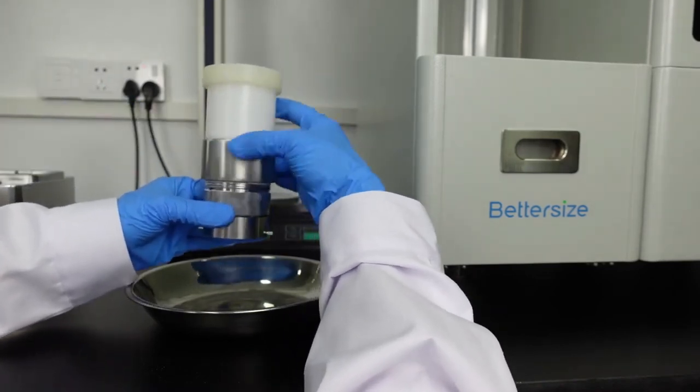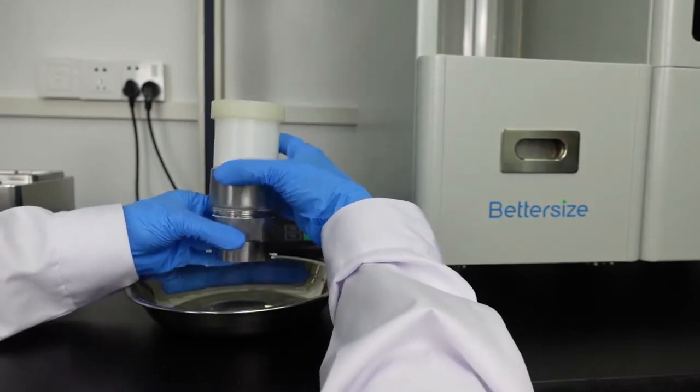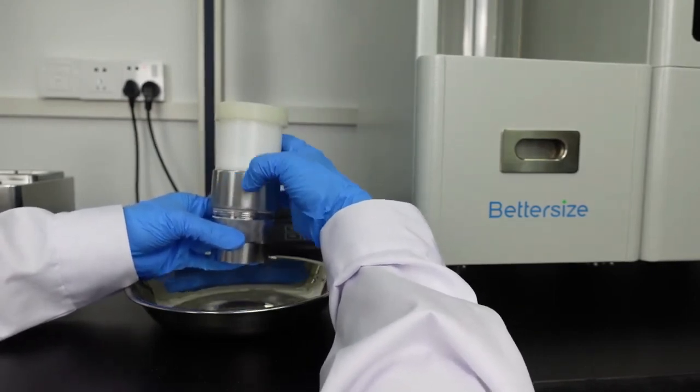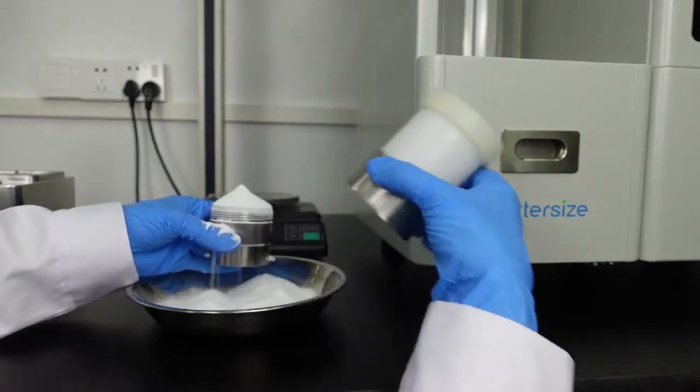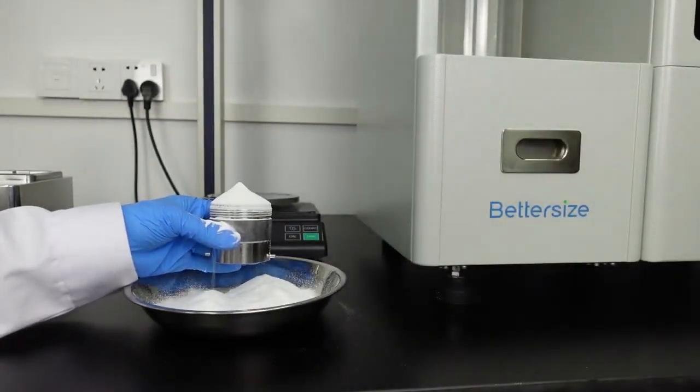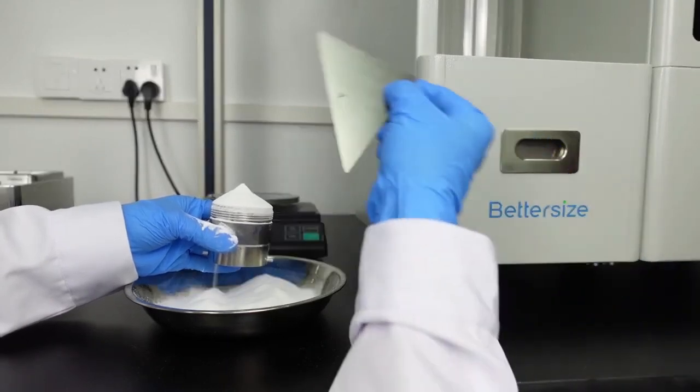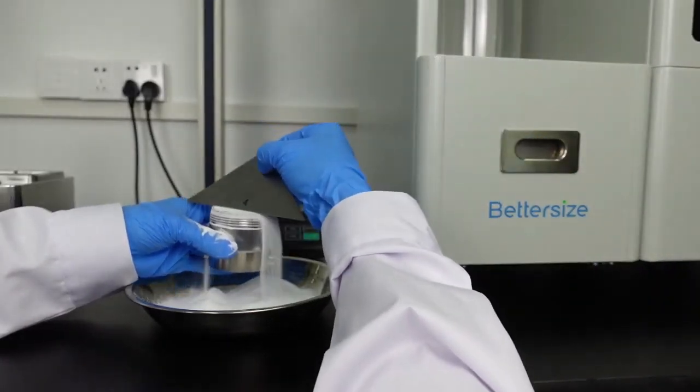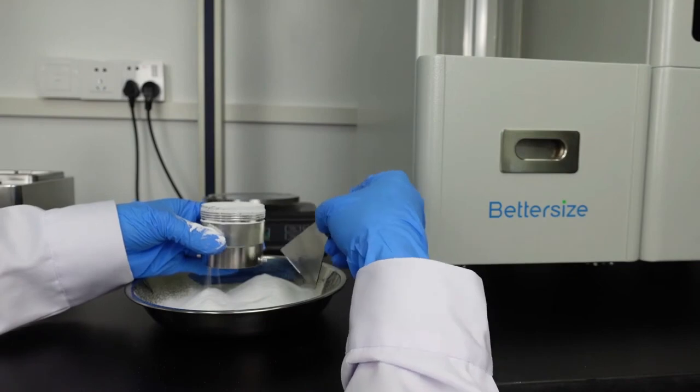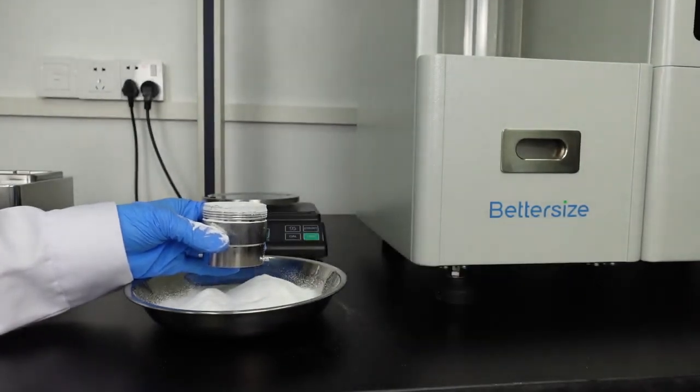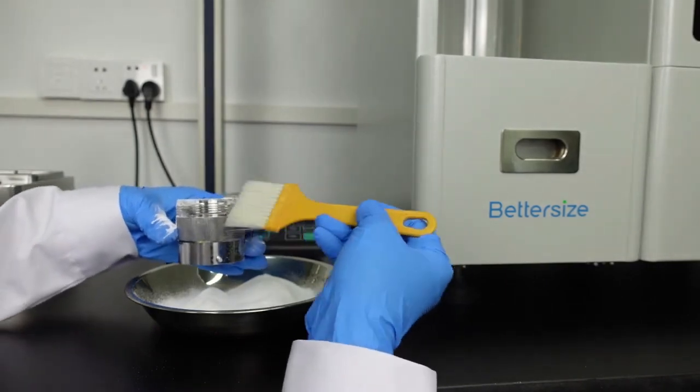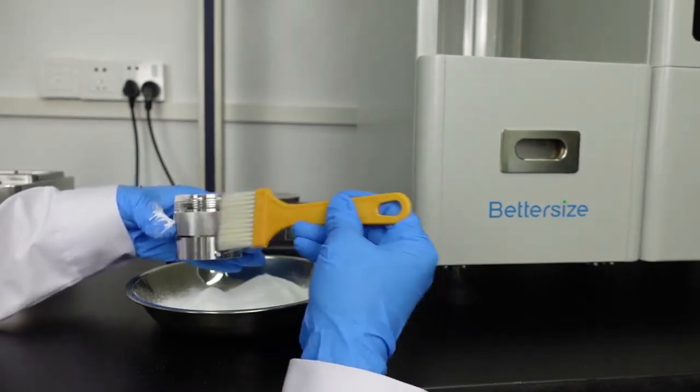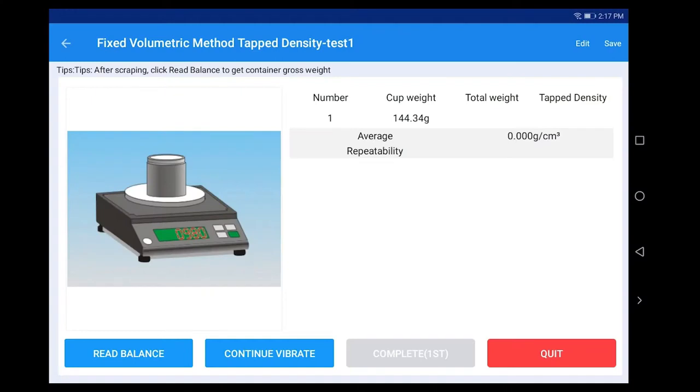Separate the 100ml container from the extension tube. Scrape excess sample from the top of the 100ml container with a scraper, and gently sweep the powder adhered to the outer wall of the container with a brush, and place it on the balance.